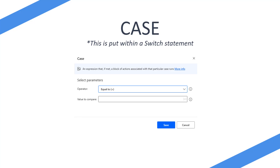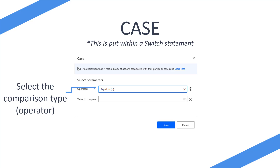This is what you see when you add a case to Power Automate Desktop. You get a pop-up saying you need to select your operator, and the operator is the comparison type. You're going to say: I want to see if this is equal to, greater than, less than, greater than or equal to, or less than or equal to. Those conditions are going to be used to compare the value.